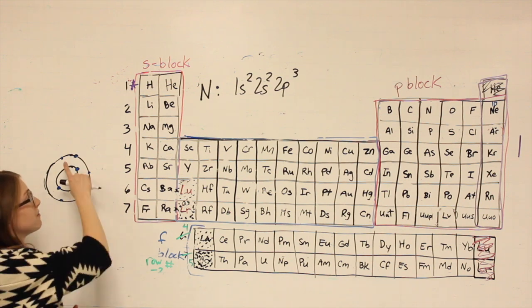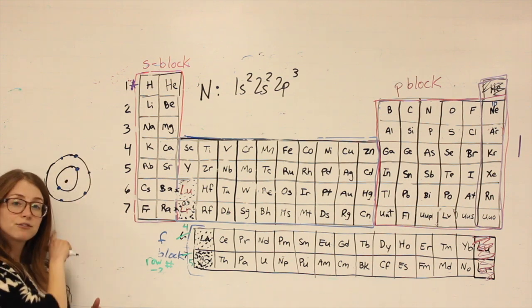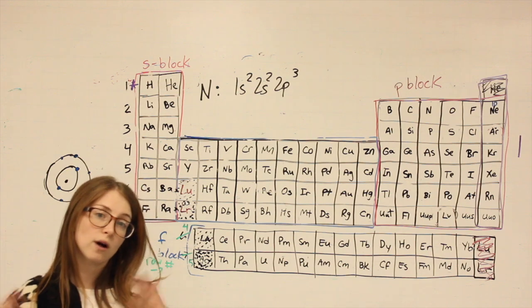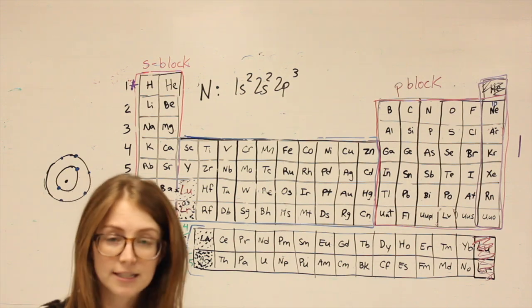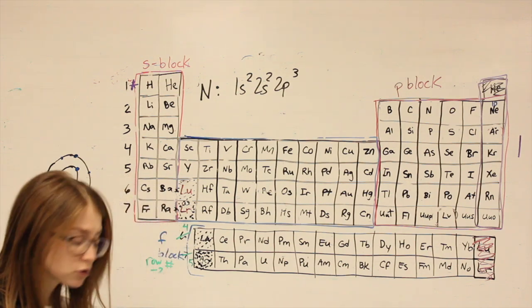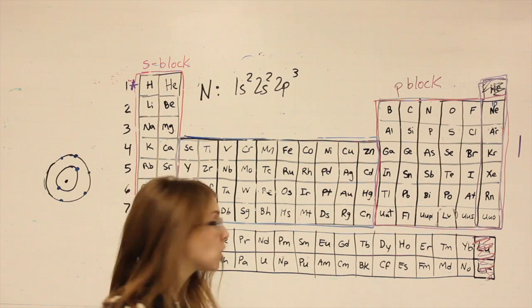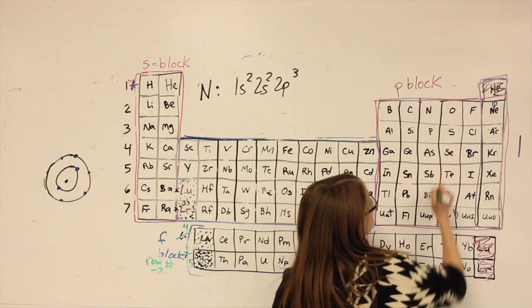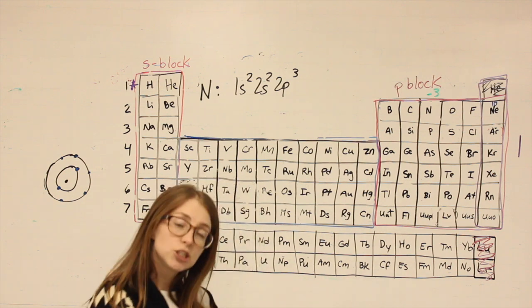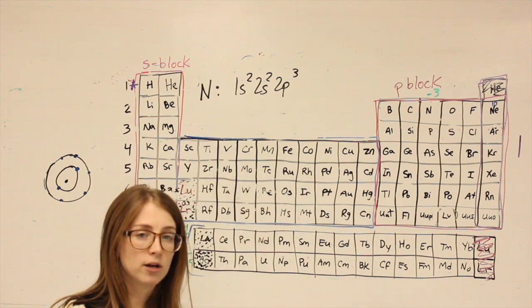Thinking through it, is it faster to lose all five or to gain three more and be in a full shell of eight? It's going to be faster to gain three more. So on your periodic table at the top, you probably have a minus three for this column. Nitrogen likes to be a minus three ion.